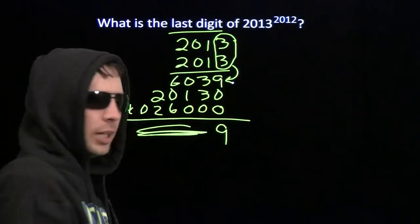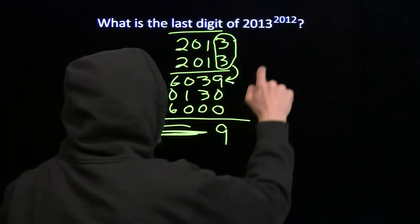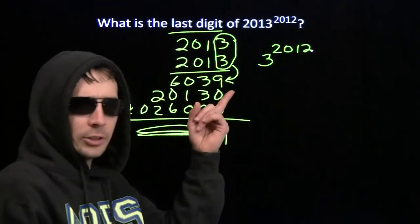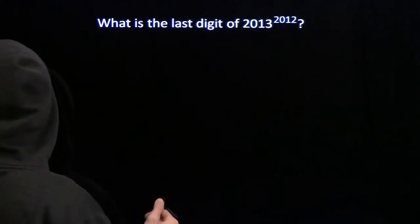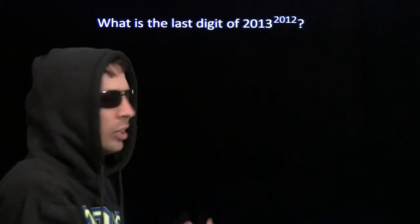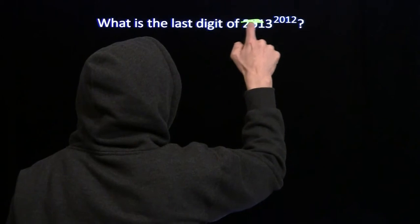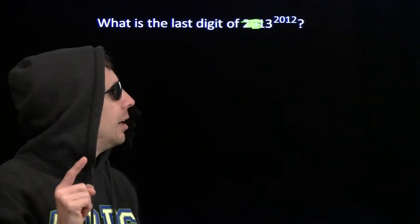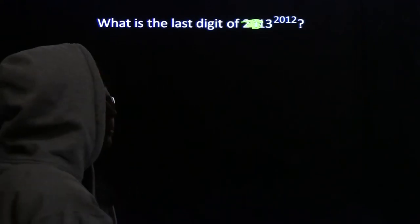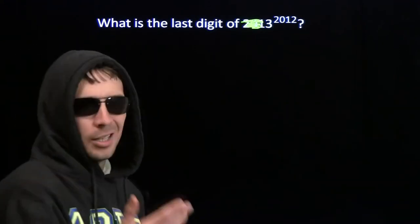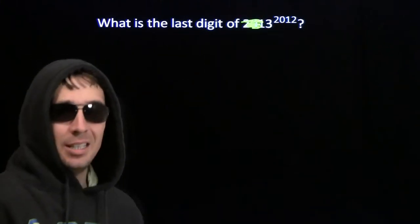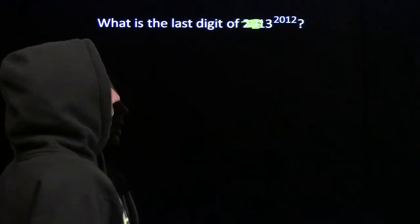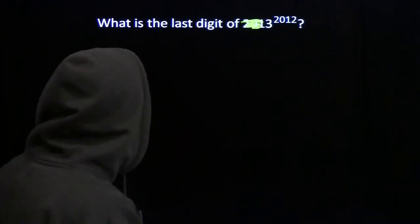So when we're looking for the last digit of 2013 to the 2012, all we're really looking for is the last digit of 3 to the 2012. In other words, when you start off looking at a problem like this, you're really looking at a problem like this. And now I still don't know what to do. 3 to the 2012 — that's not as bad as multiplying out 2013 to the 2012, but that's still going to take forever. I got nothing better, so do something stupid.